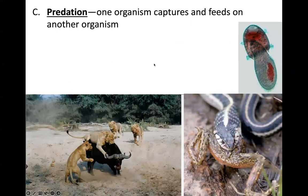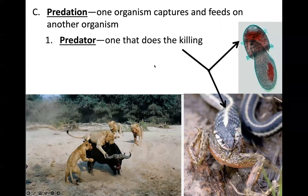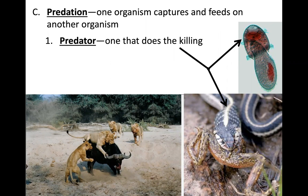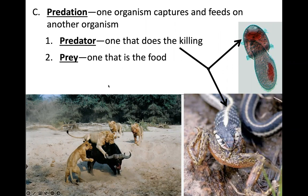Predation is another relationship we must take into account as we look at ecosystems. Predation is a relationship in which one organism captures and feeds on another organism, and in this case one member is going to be harmed. The predation relationship involves both a predator and prey. The predator is the one that does the killing, while the prey is the one that becomes a source of food.